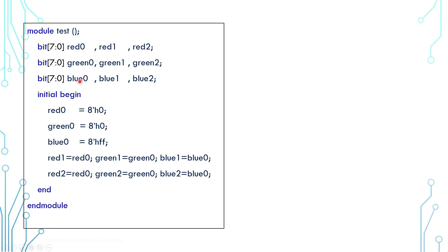Now that we've understood the syntax, let's look at this code to better appreciate its functionality. There are 9 variables — 3 red, 3 green, and 3 blue — all of which are 8 bits. Or in another way, you can see them as 3 sets of red, green, blue. In the initial block, red0, green0, and blue0 are assigned some values.